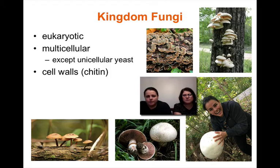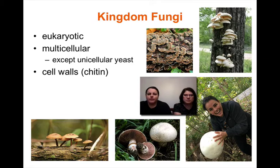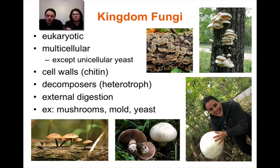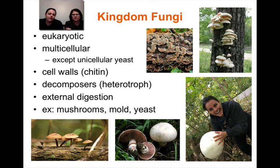Fungi have cell walls — they have a cell membrane on the outside, and all living things have cell membranes. Everything except animals, for the most part, has a cell wall around the outside to help protect it. The cell walls in fungi are made out of a different substance called chitin. Fungi are decomposers — a lot of people confuse them and think they do photosynthesis, but they don't. They're not green, they don't photosynthesize, and they never make their own food. They are always heterotrophs, and specifically they are decomposers — they break down dead material for their nutrients.